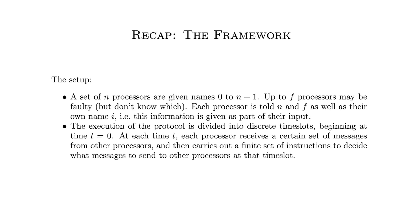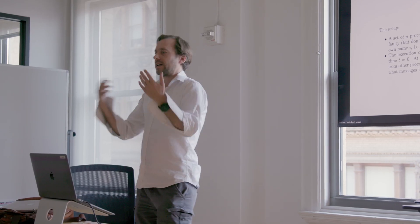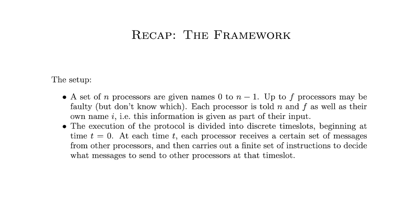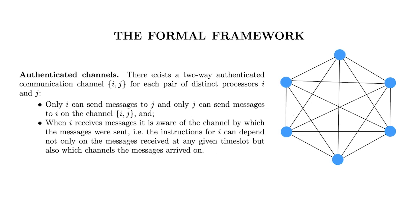We're considering an execution divided into discrete time slots: time slot 0, time slot 1, time slot 2, and so on. At each time slot, each processor receives a set of messages, carries out some finite set of instructions, and decides what message to send at that time slot. Between each pair of processors there's an authenticated channel — only those two processors can send messages on it, and each processor knows exactly who's at the end of each of their channels.